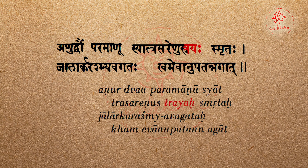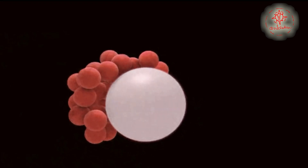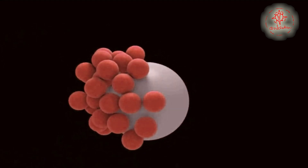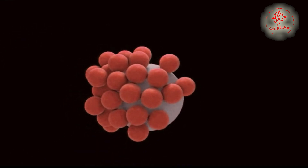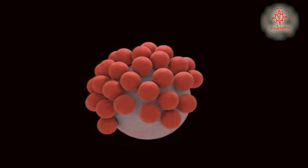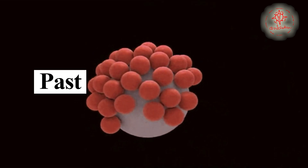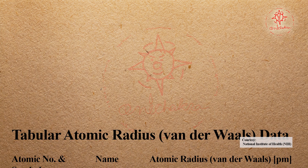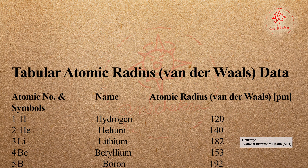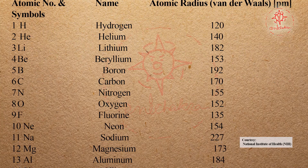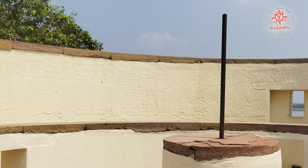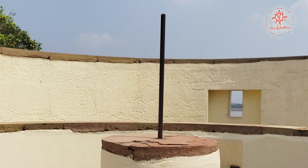It is said three Anus make a Trasarenu, which is visible — but in reality, even a combination of a hundred molecules is not visible to our naked eyes. So we have to understand that the concept of Anu or molecules in the past and present differ in size. The size of atoms and molecules also differs from element to element and compound to compound. We must acknowledge and appreciate the calculation process of ancient Indian scholars, which is still very relevant.